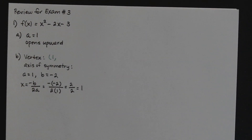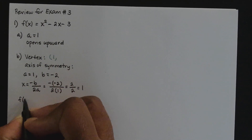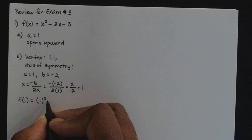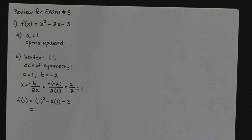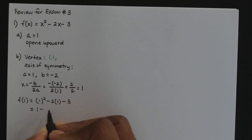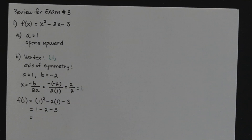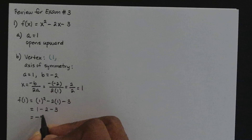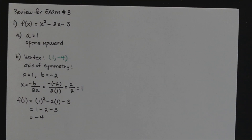To find the y-coordinate of the vertex, we take x equals 1 and substitute it for every x in the function. So we evaluate f of 1: 1 squared minus 2 times 1 minus 3. That simplifies to 1 minus 2 minus 3, which is negative 4. So the vertex is the ordered pair 1, negative 4.